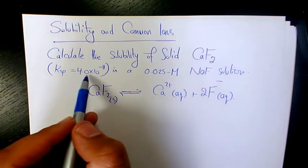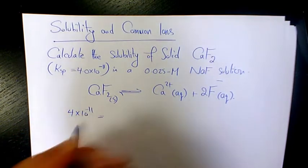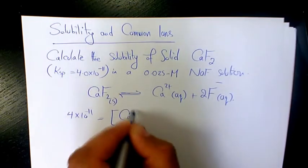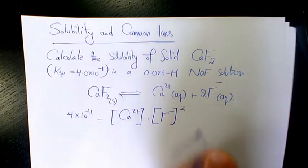The Ksp is 4 times 10 to the power of negative 11, so 4 times 10 to the power of negative 11 will be the concentration of calcium times concentration of fluoride to the power of two.